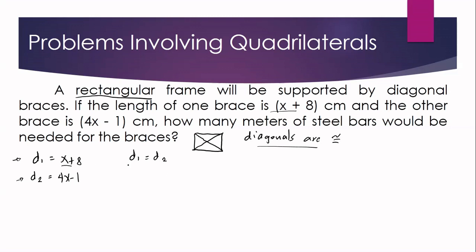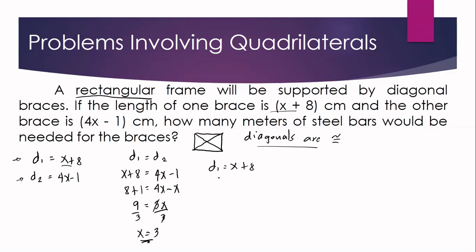By substituting, diagonal 1 is x plus 8 and diagonal 2 is 4x minus 1. Combining like terms: 4x minus x equals 8 plus 1, giving us 3x equals 9. Dividing both sides by 3, x is equal to 3. Now let us get the measure of each diagonal. Diagonal 1 equals x plus 8, substituting x equals 3 gives us 3 plus 8, which equals 11 centimeters.